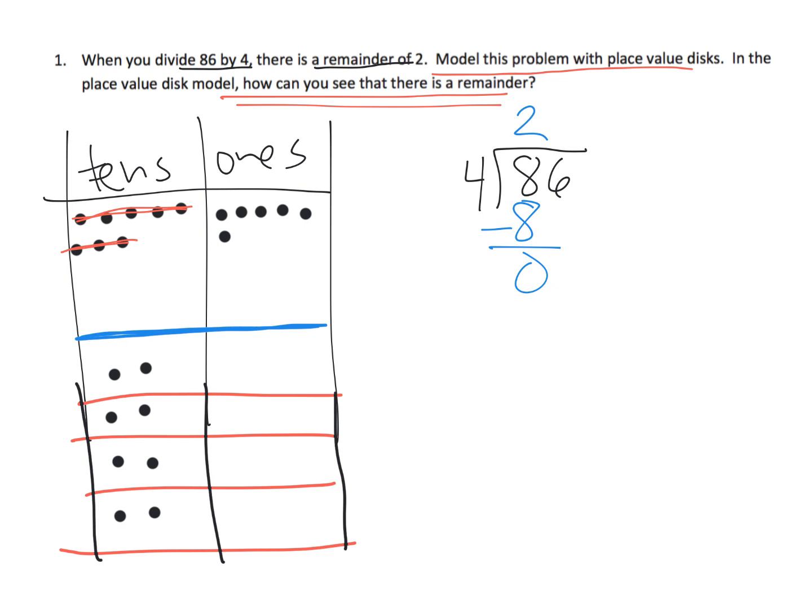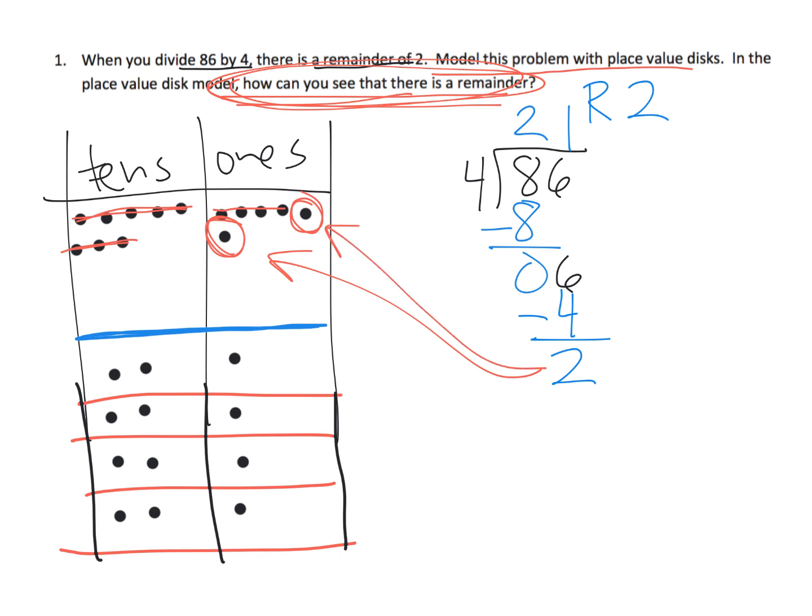So over here in our standard algorithm, we see that we had 8 tens divided by 4 groups. This means there's 2 in each group. So 2 times 4 is 8. So we've used up all 8 of our tens. We have no tens left over. And so now, over here in our standard algorithm, we have 6 ones left over. And we're going to sort those into our 4 groups. 1, 2, 3, 4. And we have 2 left over. So we have 1, 2, 3, 4. We have this one left over, and this one left over. So how is that going to look in our standard algorithm? Well, you have 6 ones divided amongst 4 groups. So each group is going to get 1 dot. You have 2 dots left over. So our answer is 21 remainder 2. So the question, going all the way back to the top, it says, model this problem with place value disks. And in the place value disk, how can you see that there is a remainder? So where do we see our remainder in our place value disk? It's right here. There's our 2 remainders, our remainder of 2.